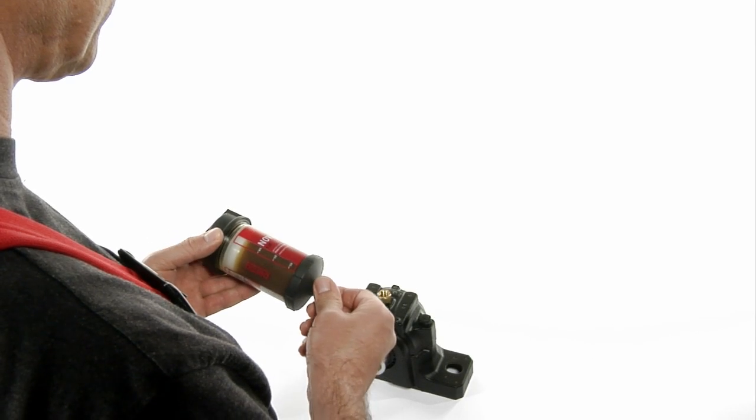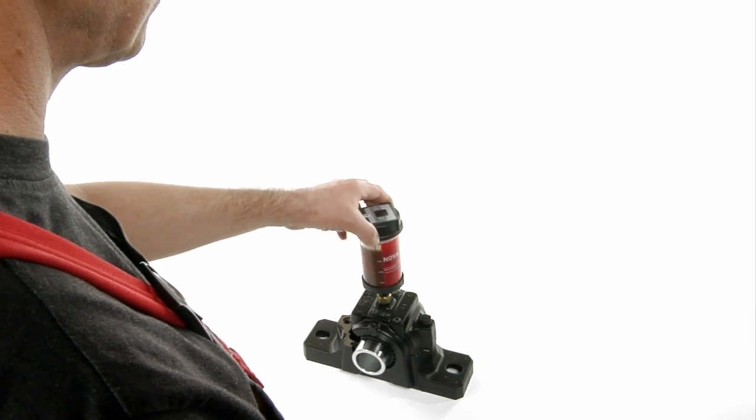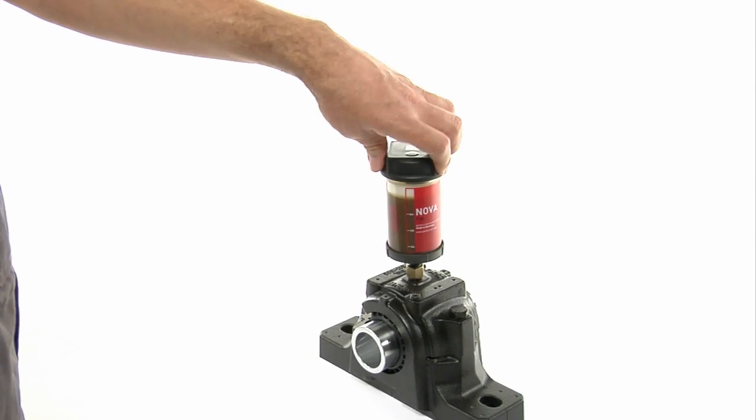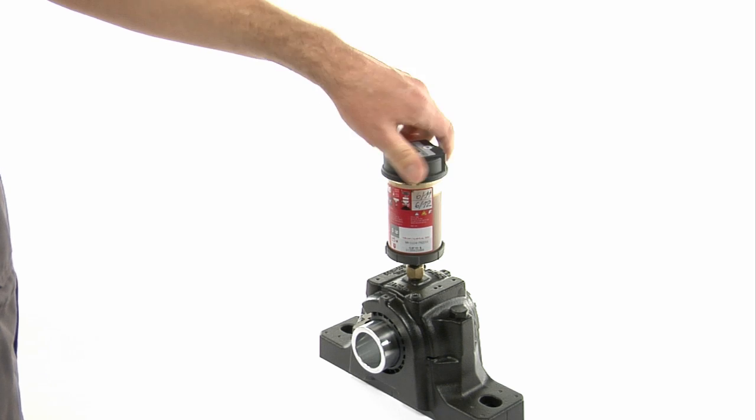Remove the black outlet plug from the lubricator and screw the activated lubrication system into the lubrication point.